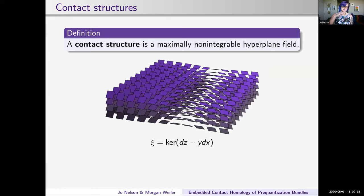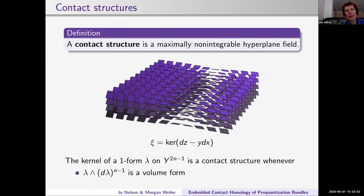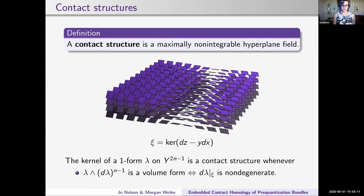To further illustrate that, here are four stacks of these planes at z equals zero, one, two, three, four. You can probably more convincingly say that this is maximally non-integrable. The way you can actually check if a contact structure is maximally non-integrable is if you look at the kernel of a one-form: that's going to be a contact structure whenever lambda wedge d lambda to the n minus one is a volume form. That's equivalent to saying that d lambda restricted to its kernel is non-degenerate.